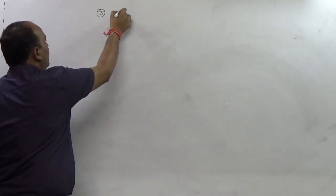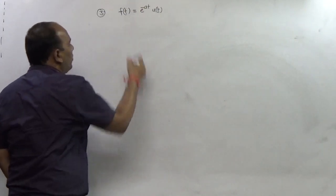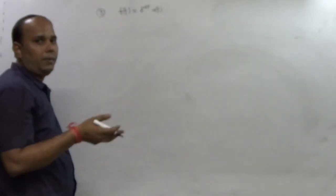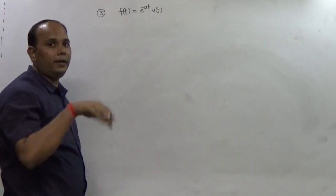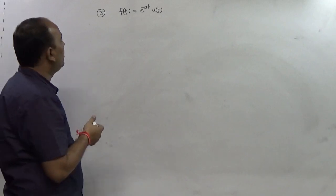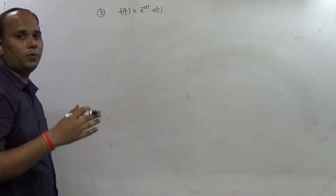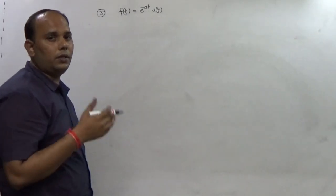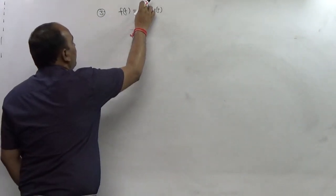Question number three: f(t) = e^(-at)u(t) and we have to find the Laplace transform of this function. The Laplace transform is a mathematical tool, but we should know where the Laplace transform exists — its region of existence, the region of convergence — because the Laplace transform is just a particular part of the Fourier transform. If the Fourier transform does not exist, we use the Laplace transform.